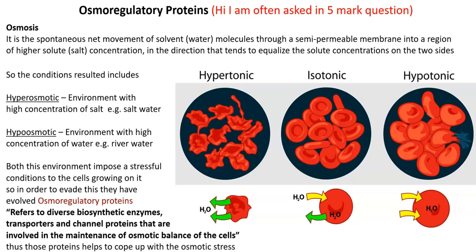The next condition is a hypoosmotic environment with a high concentration of water compared to that of salt — a very typical example is river water. This diagram explains what is happening to a cell when it is kept in a hypertonic or hypotonic solution. Isotonic is the condition in which the cell will not rupture and will maintain its complete shape.